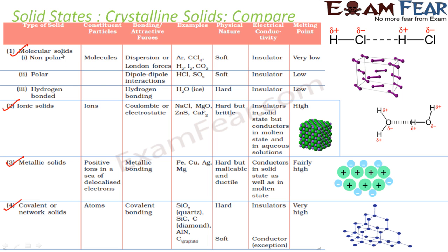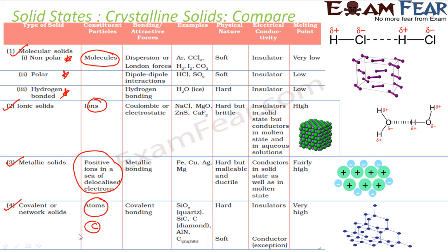If we talk about molecular solids, we have three different types: nonpolar, polar, and hydrogen. In all molecular solids the constituent particle is molecules. In all ionic solids the constituent particle is ions. In metallic solids we have positive ions of metals and a sea of electrons. And in covalent network solids we have atoms — for example carbon — generally nonmetals.